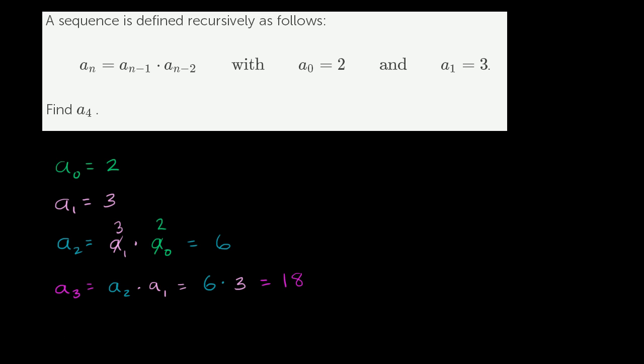And then finally, a sub 4, which I'll do in yellow. A sub 4 is going to be equal to a sub 3 times a sub 2, so 4 minus 1 is 3, 4 minus 2 is 2, times a sub 2, which is equal to 18 times 6, which is equal to, let's see, 6 times 8 is 48, plus 60, or 6 times 10 is 100, 108. And we're done. A sub 4 is equal to 108.